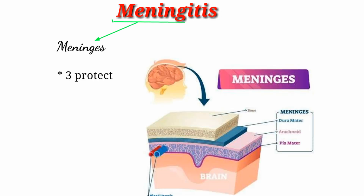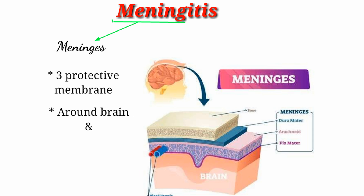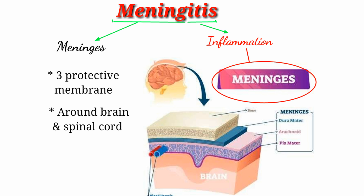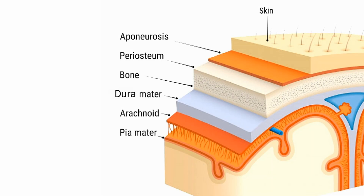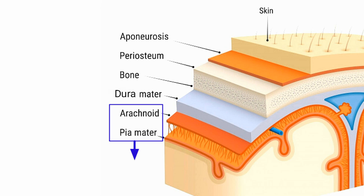Meninges are three protective membranes that cover the brain and spinal cord, and 'itis' refers to inflammation. So meningitis is an inflammation of the meninges — most specifically it refers to the inflammation of the two inner layers called the leptomeninges. The outer layer is the dura mater, the middle layer is the arachnoid mater, and the inner layer is the pia mater. These last two — the arachnoid and pia mater — are the leptomeninges.